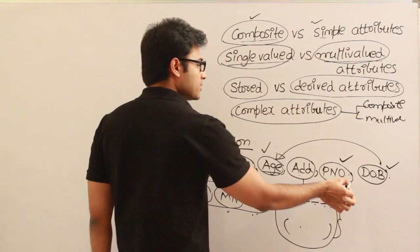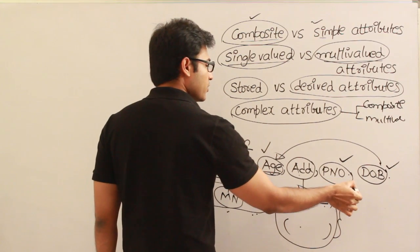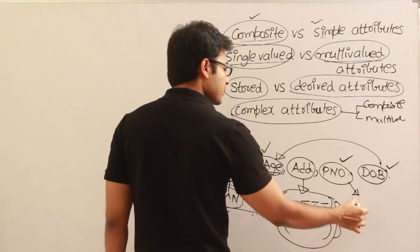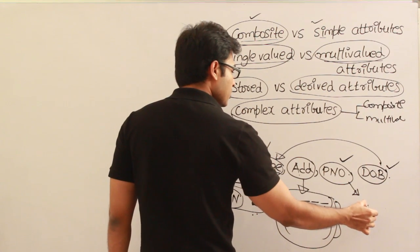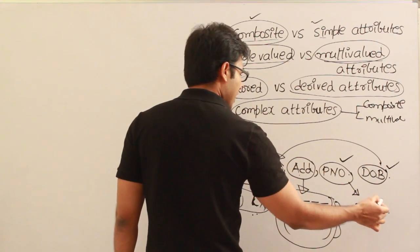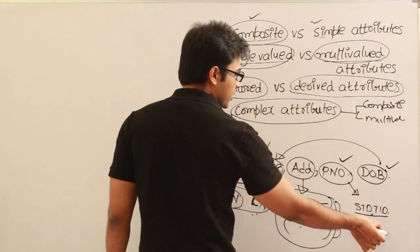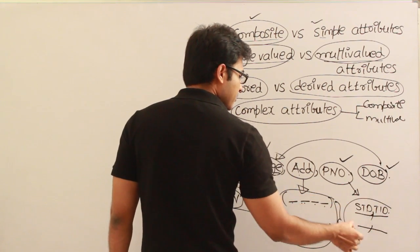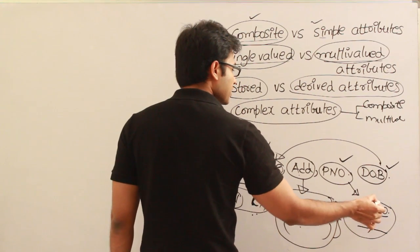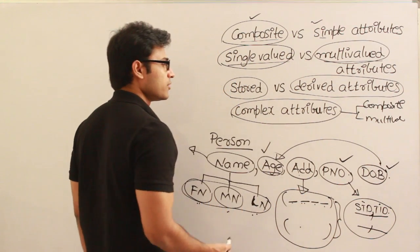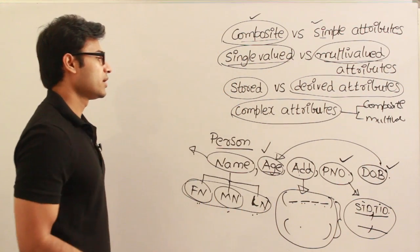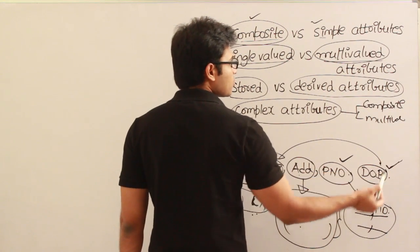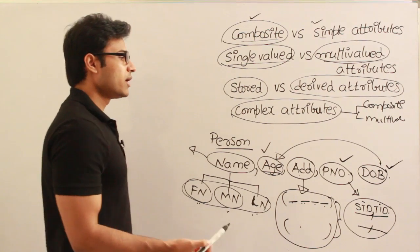Similarly, phone number can also be complex. If a phone number contains STD code and telephone ID, and a person has more than one phone number, then it is multi-valued as well as composite. Date of birth is single-valued and stored — it cannot be derived, it has to be stored.